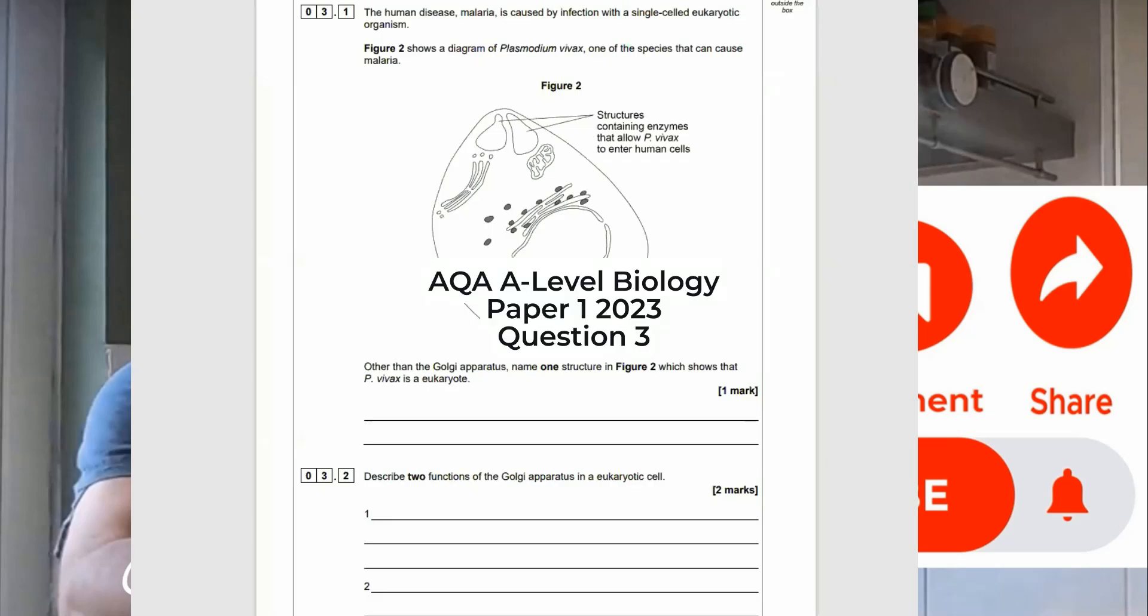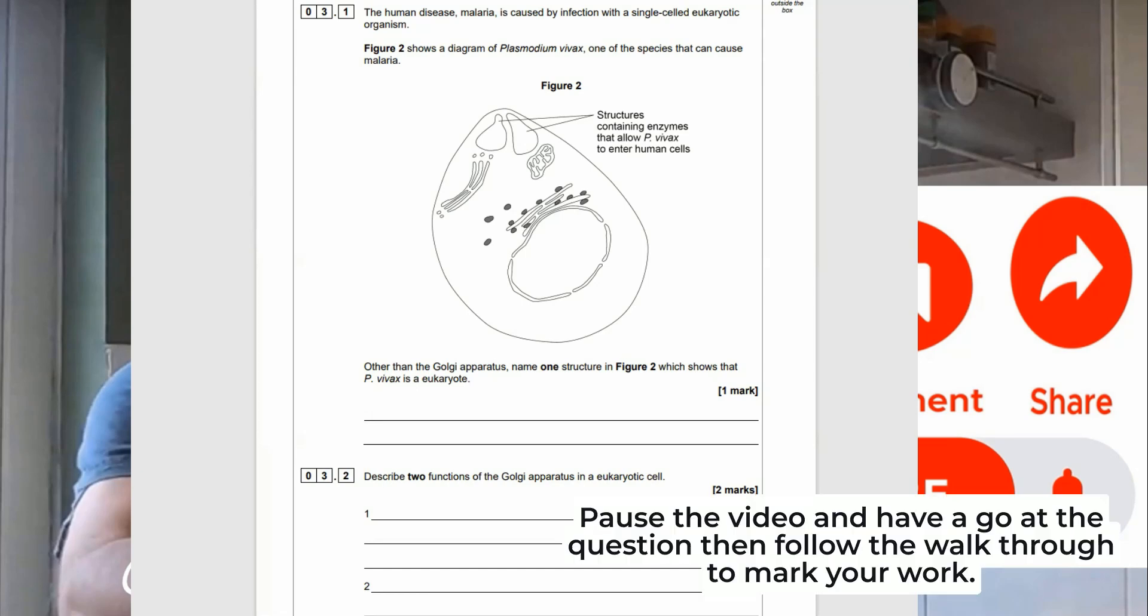Okay, welcome to Let's Get to the Marks. Today we're looking at the AQA A Level Biology Paper 1, 2023, Question 3. Make sure you pause the video and have a go at the question, then follow the walkthrough to mark your work.